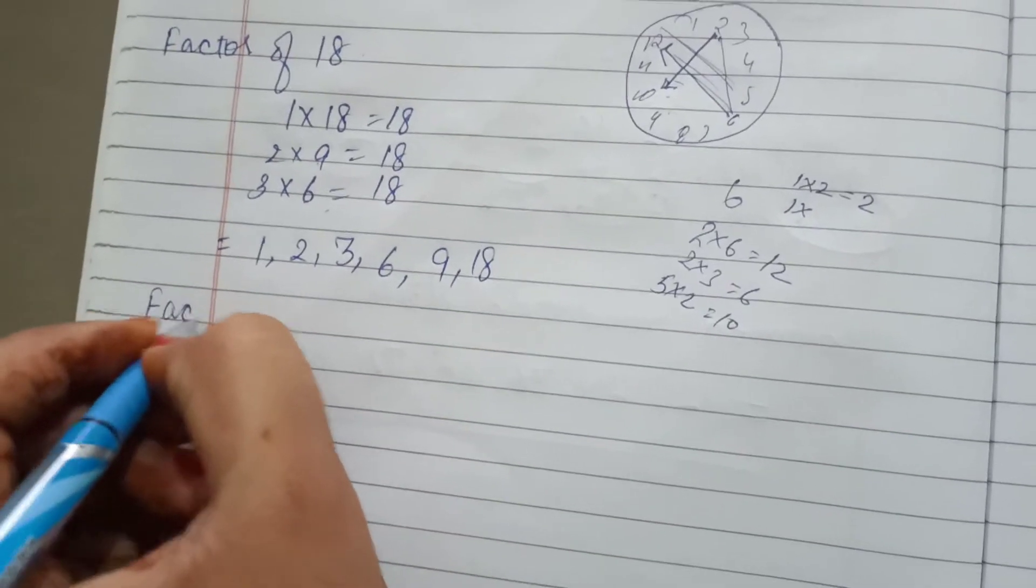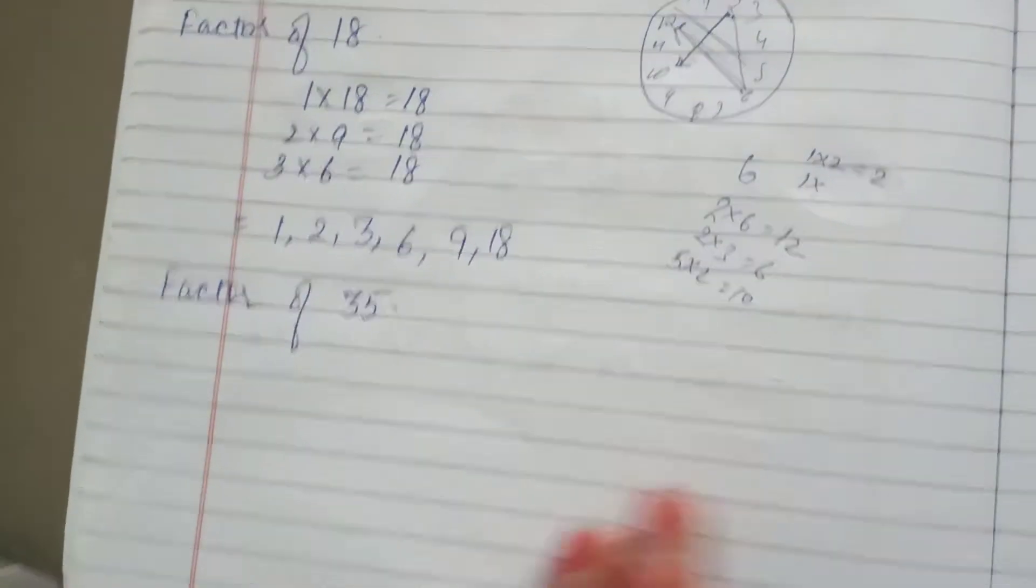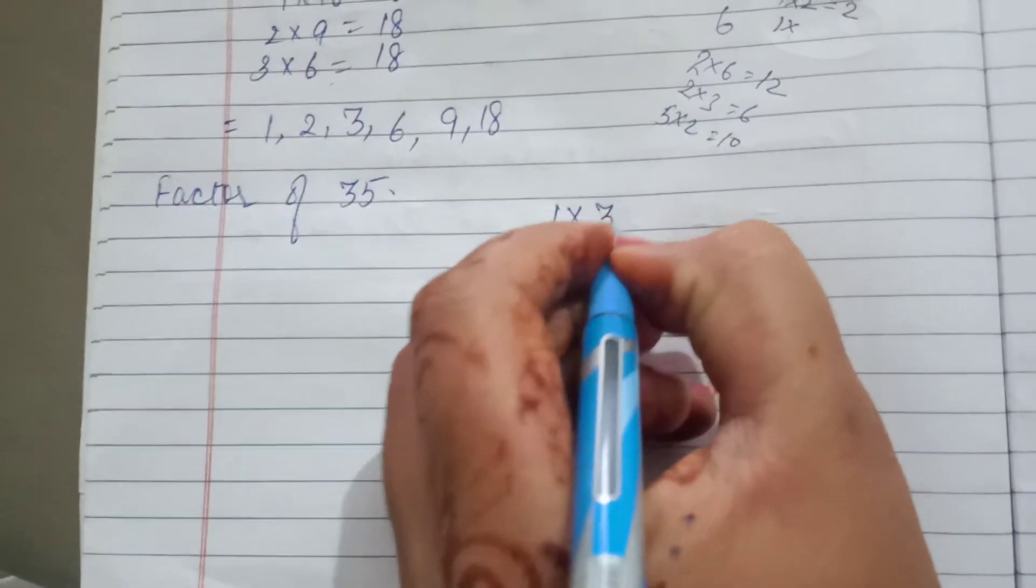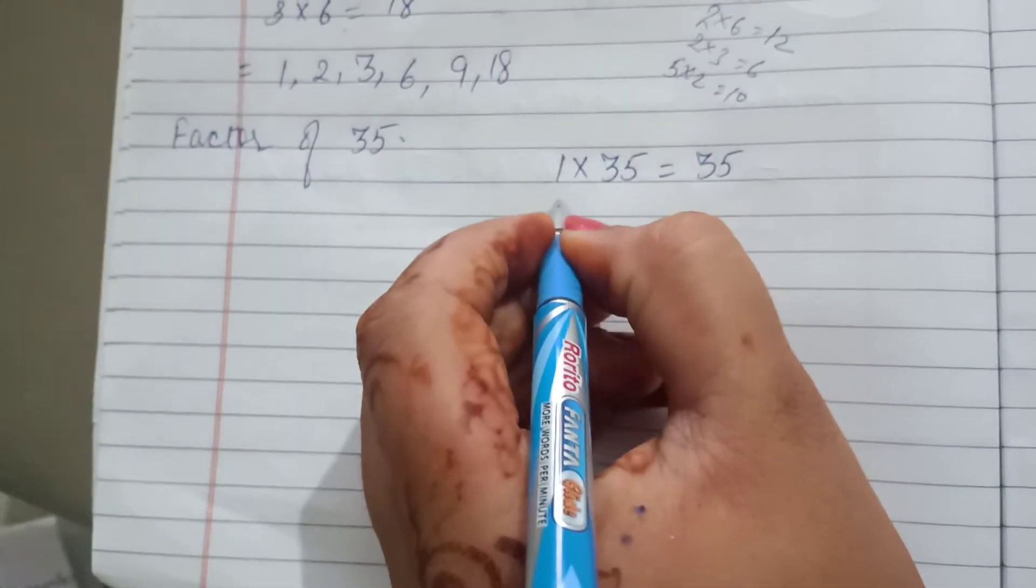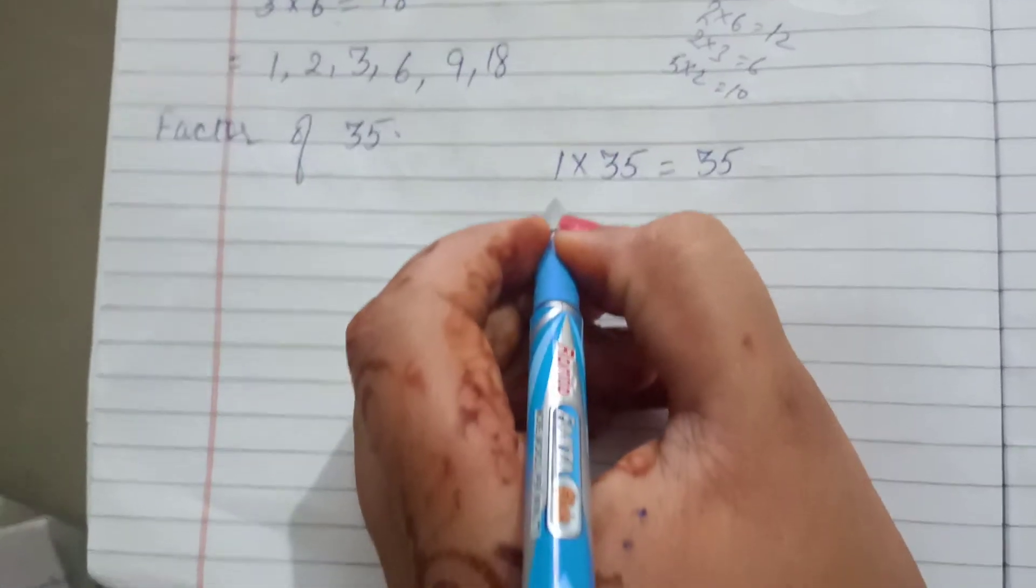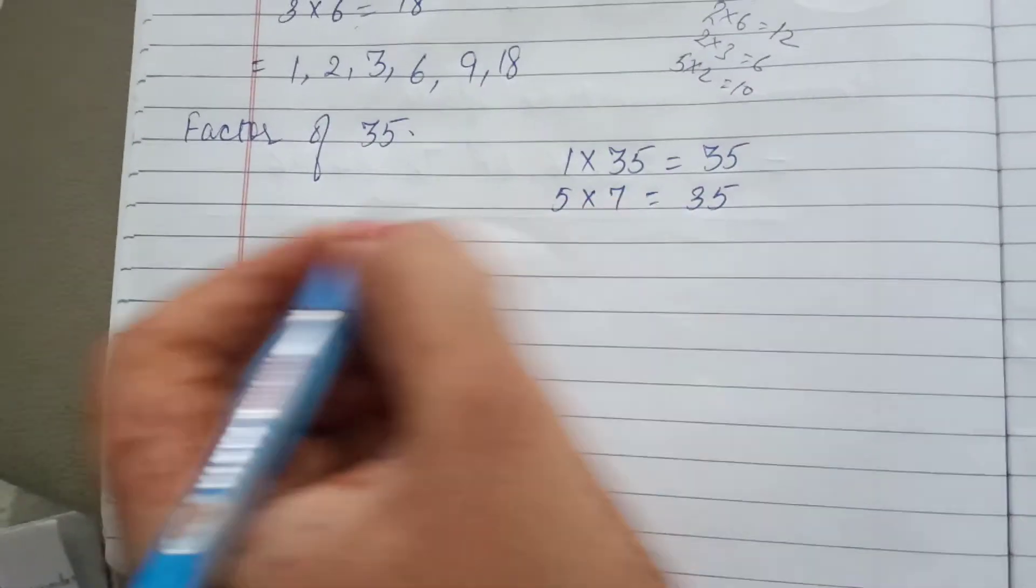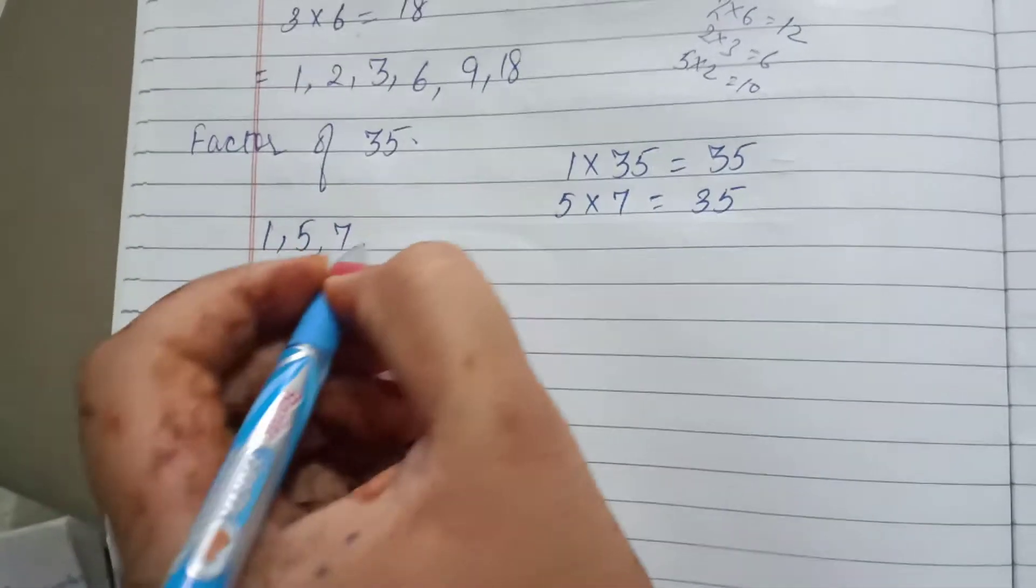Now, we write the factor of 35. It comes in 35 and 1 table, 35. Then, 5 times 7 is 35. So the factors of 35 are 1, 5, 7, and 35.